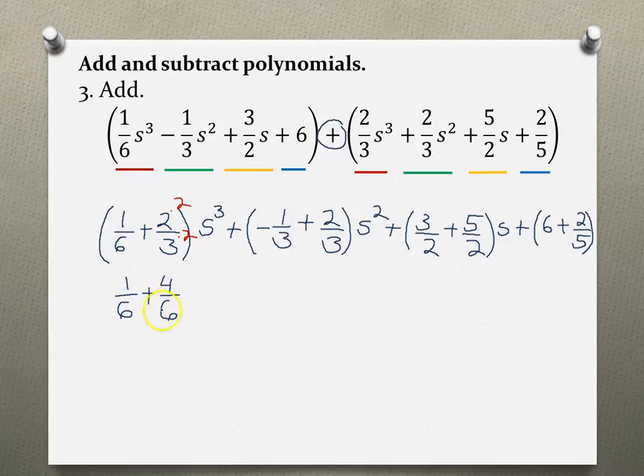Now these two terms can be added together because they have the same common denominator. We add the numerators: 1+4=5 over 6. Don't forget the variable with its power. This gives us 5/6 s³.